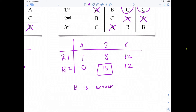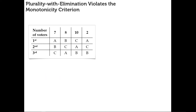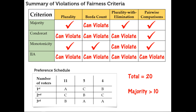In summary, that violates the monotonicity criterion because C was the winner beforehand, but when the two ballots were changed to rank C higher, C was no longer the winner. This shows that plurality with elimination can violate the monotonicity criterion. Be very familiar with this table so you know where the possible violations can occur.